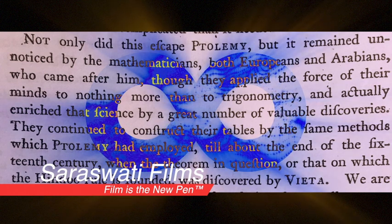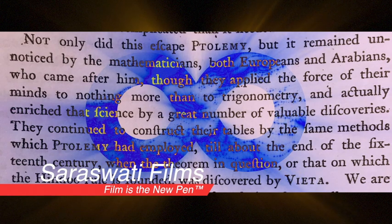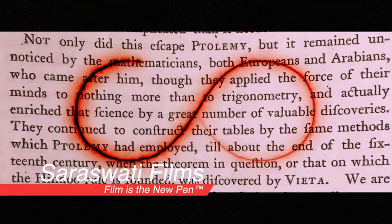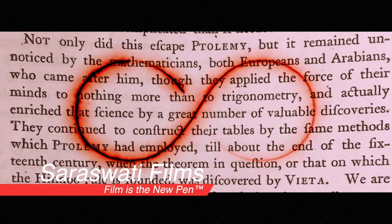Although these later mathematicians made many discoveries and contributed many valuable things, the theorem on which Hindu trigonometry rests — which allows every number in their tables to be calculated from the previous two by an exceedingly simple process — was not to be rediscovered until Vieta found it at the end of the 16th century.